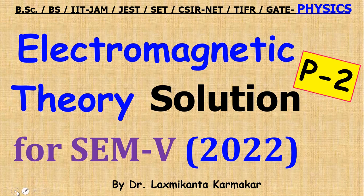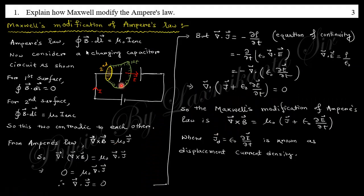Today we want to discuss 10 questions. Look at this first question: Explain how Maxwell modified Ampere's law. You know this is Ampere's law, that is integral of B dot dl equals mu naught times I enclosed. Consider a situation where there is a capacitor.